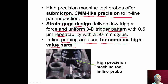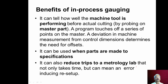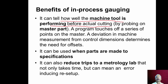In-line probing is used for very complex and high-value parts so that rejection is almost nullified. In this picture, you can see a probe inspecting a hole in an IC engine body. The in-process gauging can tell how well the machine tool is performing before actually cutting the workpieces — we use the probing tool to probe the master part.